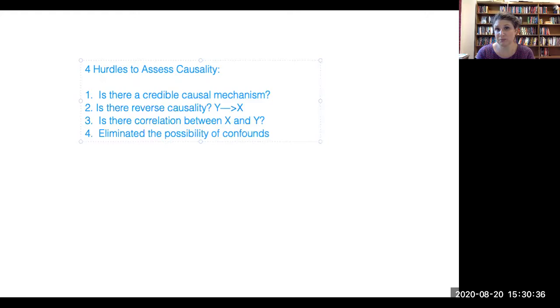So these are the four hurdles to assess causality. We're going to go through each of them in turn, but I wanted to set them up to preview for you so you know what you're looking for and think about how all four are going to be connecting together.